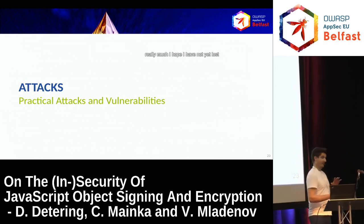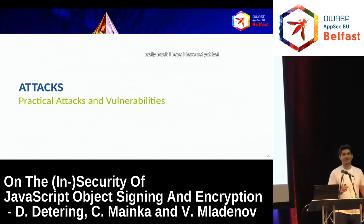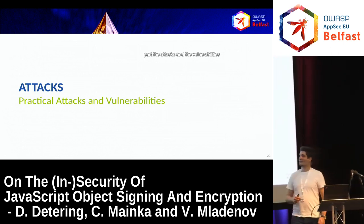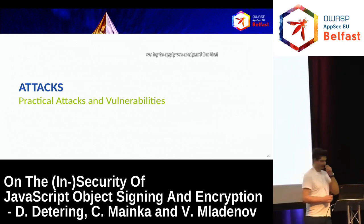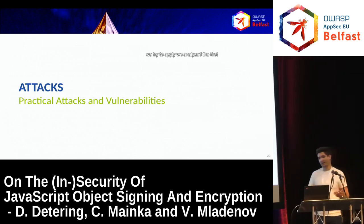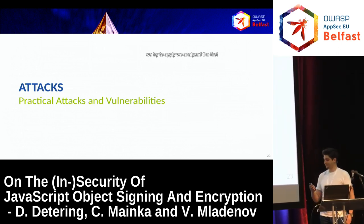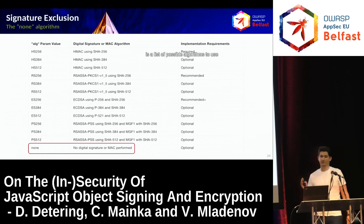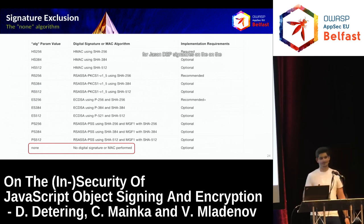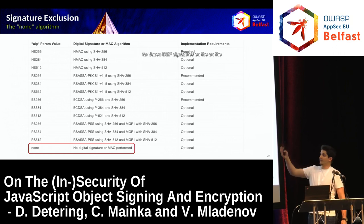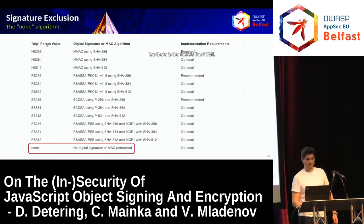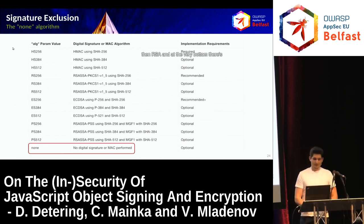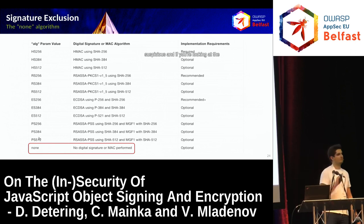So that was really quick and really much. Now comes the interesting part: the attacks and vulnerabilities. The first one is signature exclusion. This is a list of possible algorithms to use for JSON Web Signatures. On the top there are the HMAC algorithms we used in our example, then RSA. And at the very bottom there's an algorithm called 'None'. This is quite suspicious.